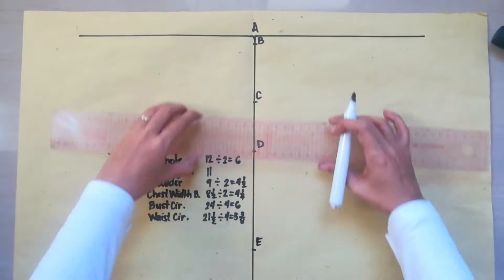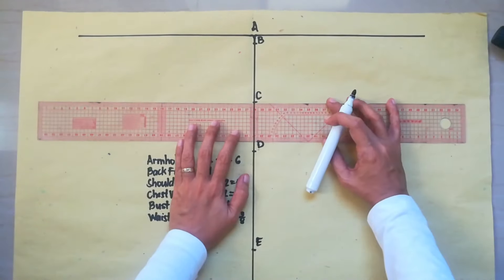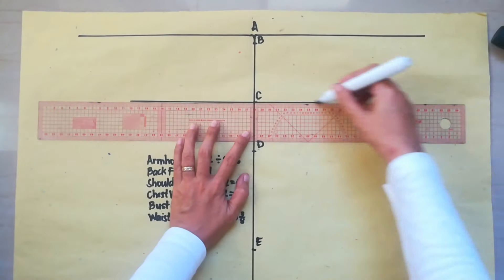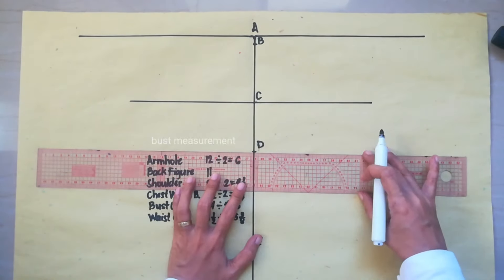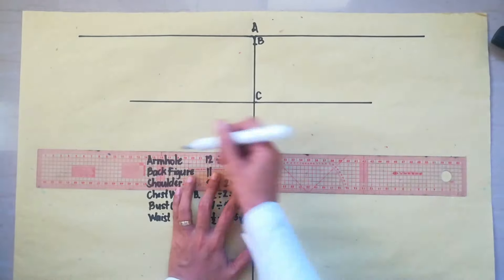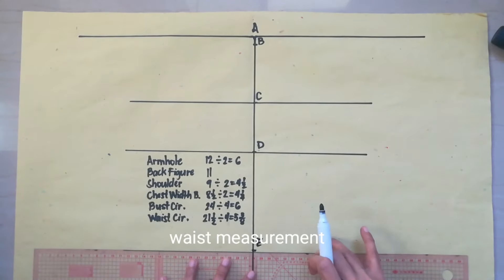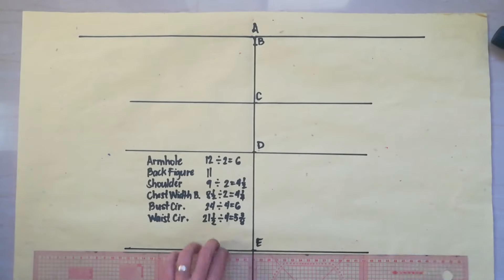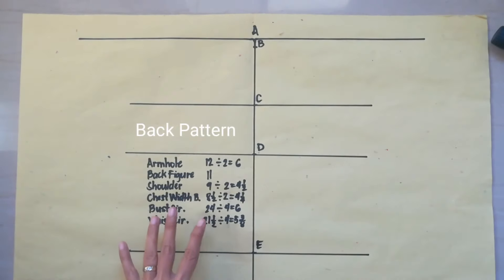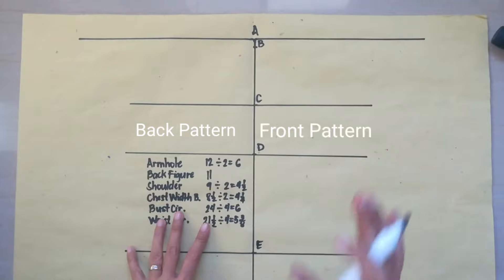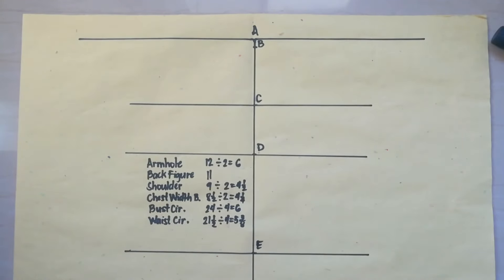Line C is for the chest measurement. Line D is for the bass measurement. And line E is for the waist measurement. This side is for the back pattern. And the other side is for the front pattern. So, now, we will proceed in making the back pattern. So, A to F is 2 and 1 half inches.